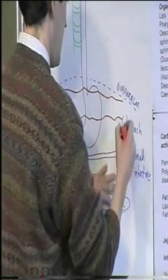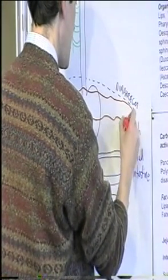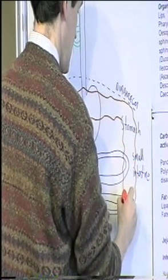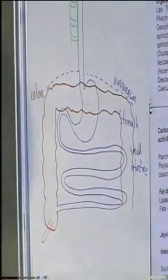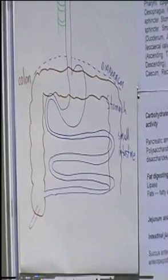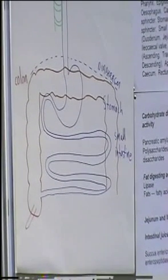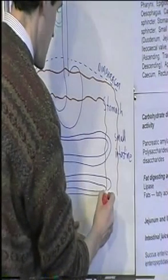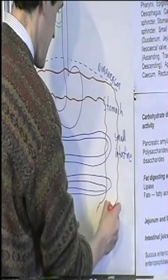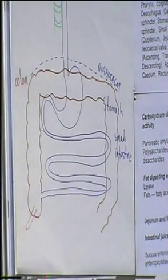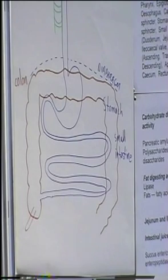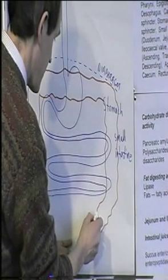There's another bend roughly where the spleen is, and then it descends down the left-hand side of the abdominal cavity. It goes into the pelvis, and there's a slightly widened bit just before the end.